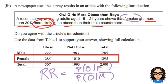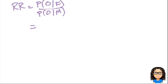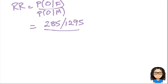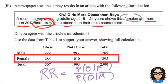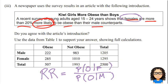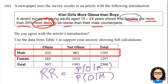Looking at the females row: there are 1295 females, and of those, 285 are obese. So the probability of being obese given female is 285 over 1295.